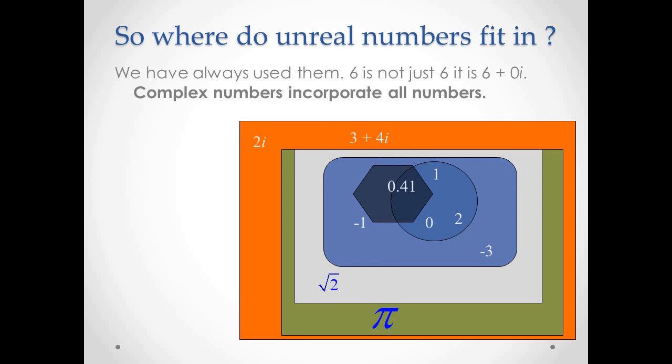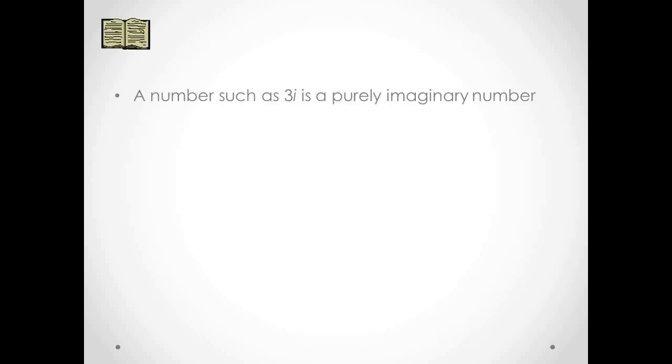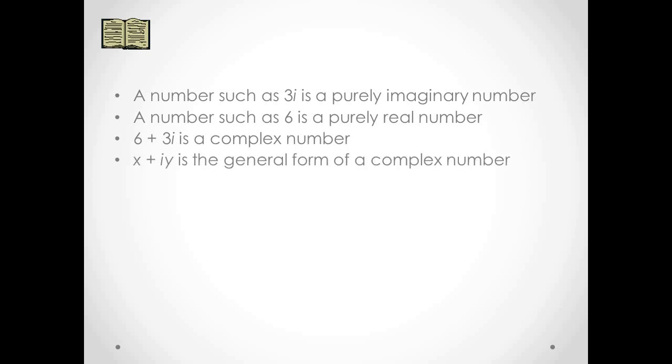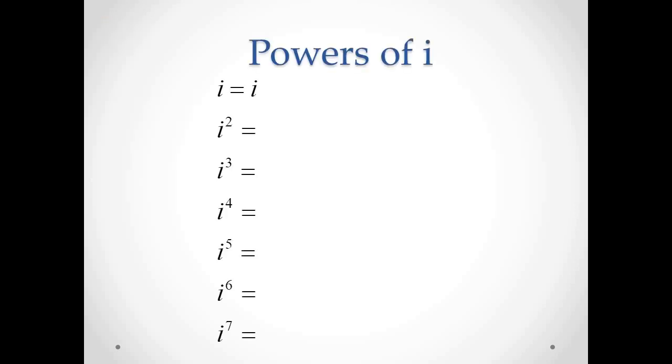So, where do the unreal numbers fit in? Actually, we have always used them. 6 is not just 6. It is 6 plus 0i. Complex numbers incorporate all numbers. A number such as 3i is a purely imaginary number. A number such as 6 is a purely real number. 6 plus 3i is a complex number. x plus iy is the general form of a complex number. If x plus iy equals 6 minus 4i, then x equals 6 and y equals negative 4. The real part of 6 minus 4i is 6 and the imaginary part is negative 4i.